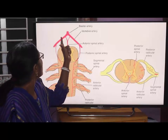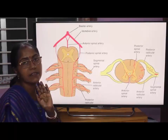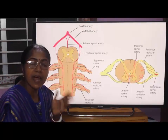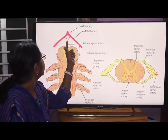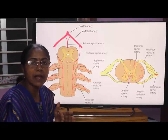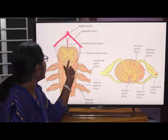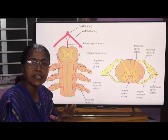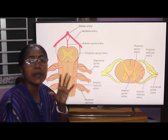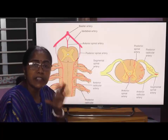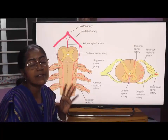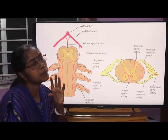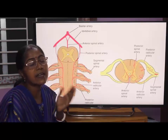Now, the anterior spinal artery — how is it formed? It is formed by the union of two arteries, each of which arises from the vertebral artery inside the skull. The two arteries unite to form the anterior spinal artery, which descends downwards on the anterior surface of the spinal cord within the anteromedial fissure and divides into a number of small branches. These small branches enter into the substance of the spinal cord and supply the anterior two-thirds of the spinal cord.